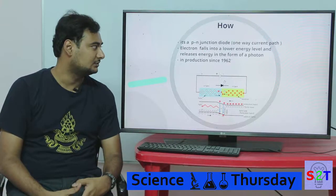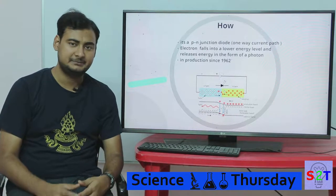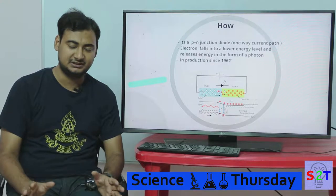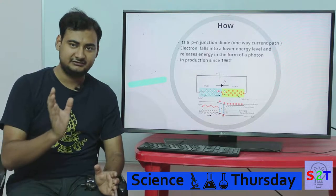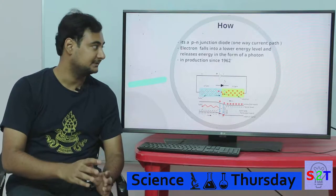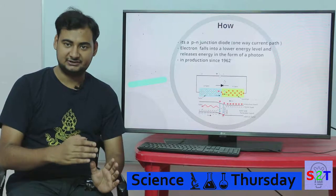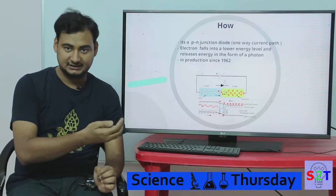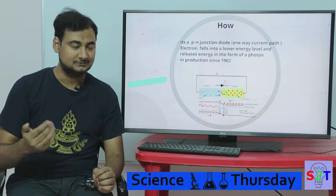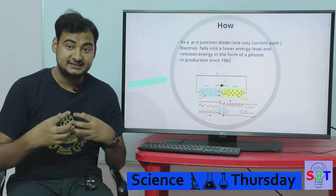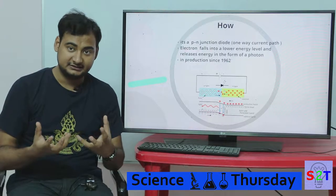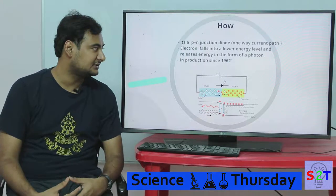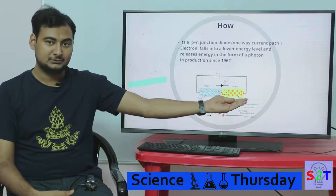To understand LEDs in depth, you need to understand the PN junction — positive and negative junction. Simply put, it's a one-way diode: electricity can only go one way. Now, how does it create light directly?